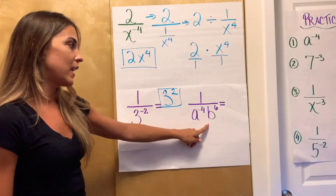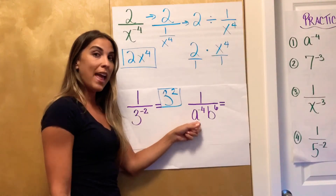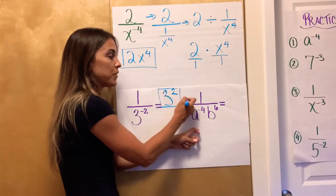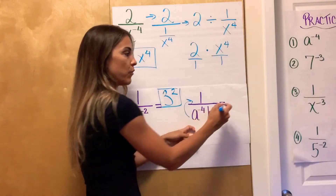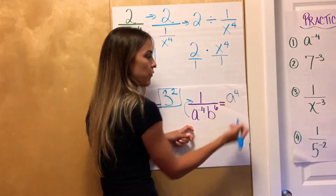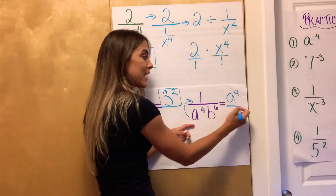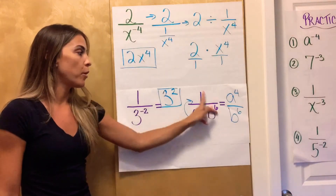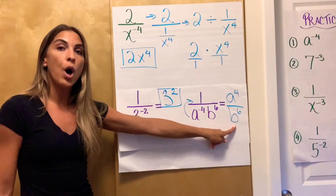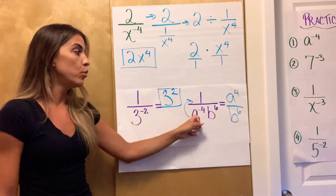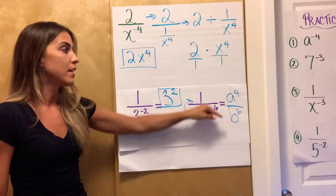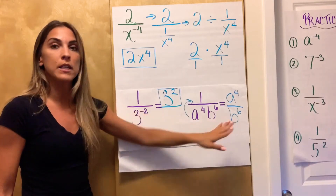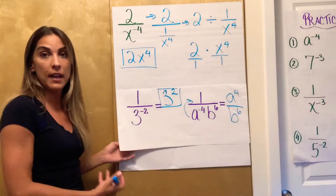In this example, what has a negative exponent? Only the a — the a has the negative 2nd — so let's move the a. It's in the denominator, so it's going to move to the numerator. There's a 1 up there, but I don't need to write it because a to the 4th times 1 is just a to the 4th. That b to the 6th doesn't have a negative exponent, so don't move it — it stays exactly where it is. So this expression simplifies to a to the 4th over b to the 6th.